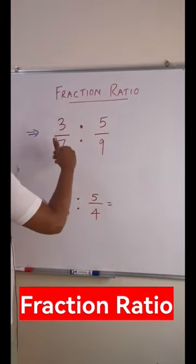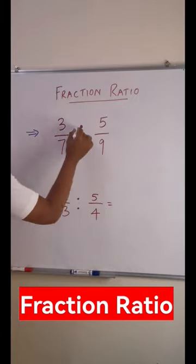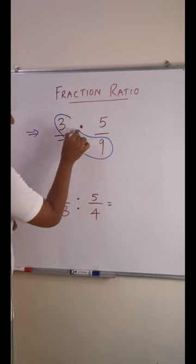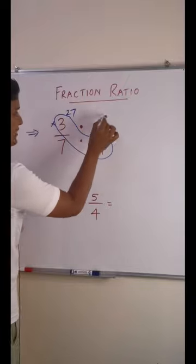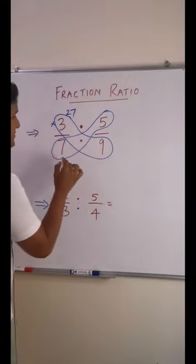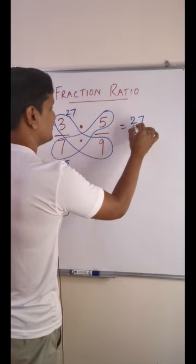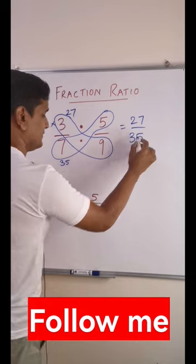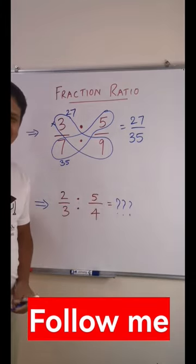Hi, hello everyone. How to find the ratio of the fractions. This is the ratio symbol. You just have to multiply this number, so when you multiply it will be 27, and when you multiply this it will be 35. The answer will be 27 over 35. Can you find the answer for this? Thank you so much.